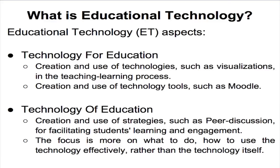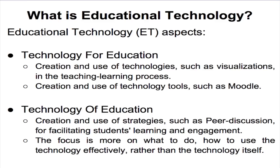The other aspect of educational technology is creating technology of education. The distinction between 'for' and 'of' is that in the case of 'of,' there is more emphasis on what to do with the technology rather than on the development of the technology. So technology for education has created the technology; now you take that technology and see how to use it effectively in the classroom — what kinds of strategies to use. Some aspects of technology of education need not even involve ICT-based technologies. For example, the strategy of peer discussion on the slide does not involve any mobiles or clickers; you can simply execute it in the classroom.